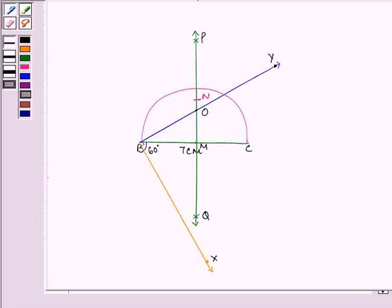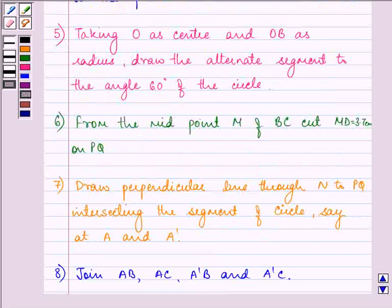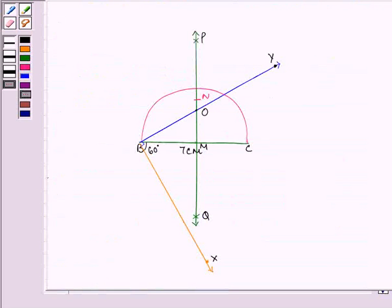Let me write down the step also for you and then we need to join these points also. So we have one point is, first of all, we need to draw a perpendicular line through N.